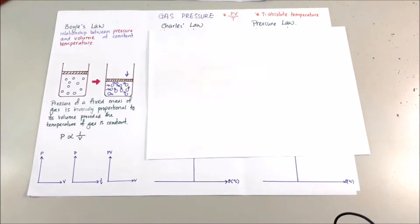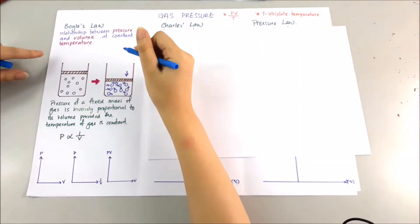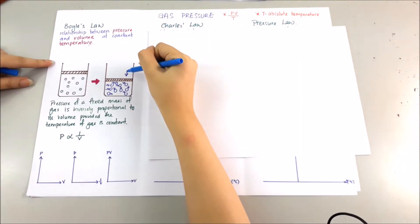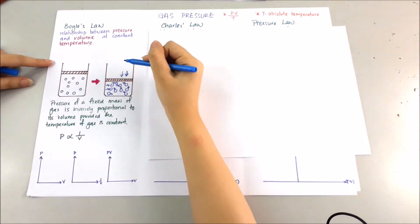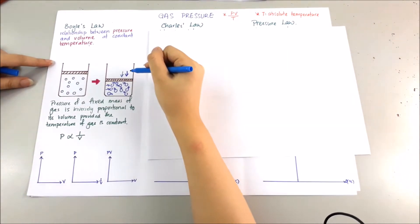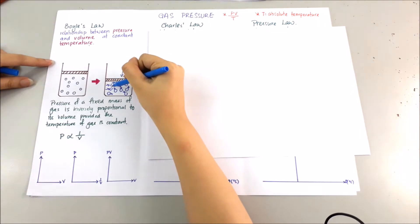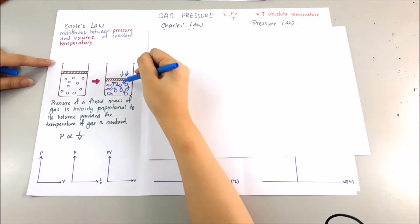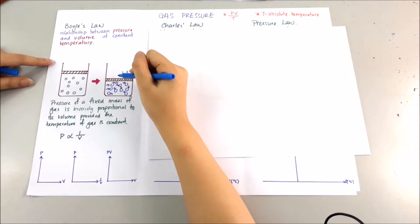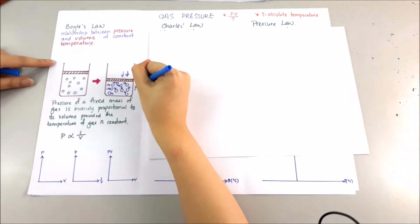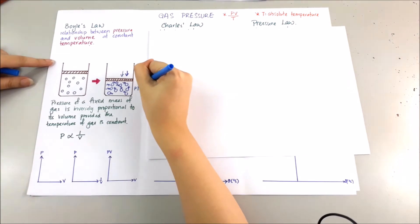Let me explain further. When the gas is being compressed, the volume decreases. The number of particles per unit volume of gas increases. The frequency of collisions increases, which results in the pressure of the gas increasing.